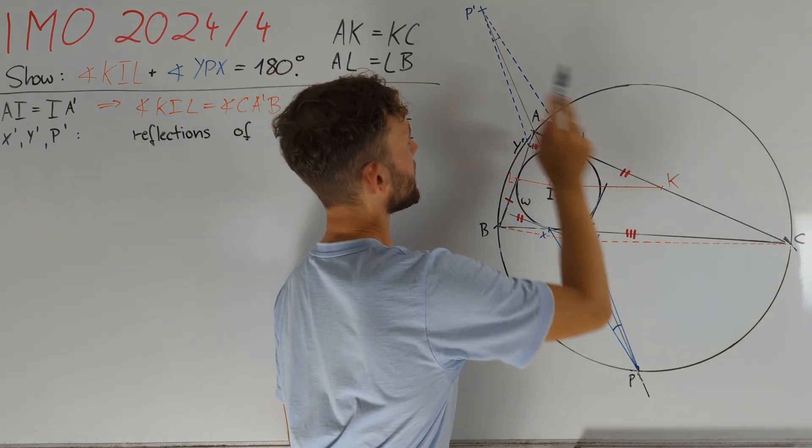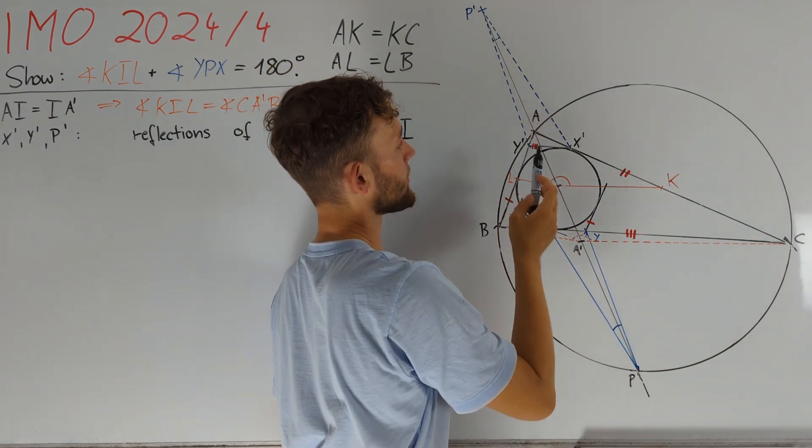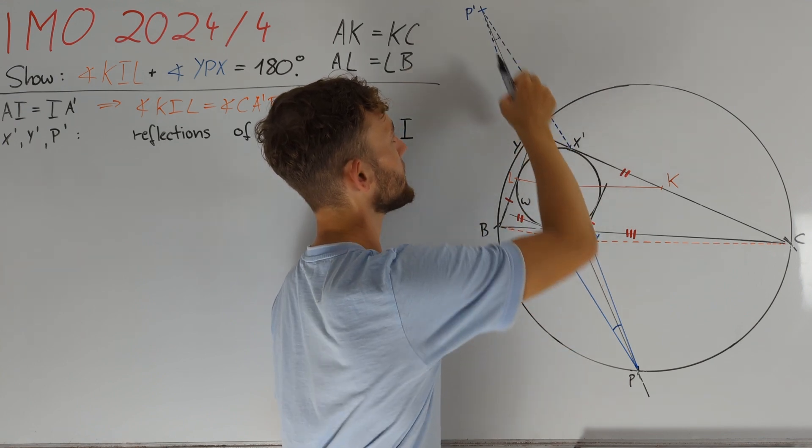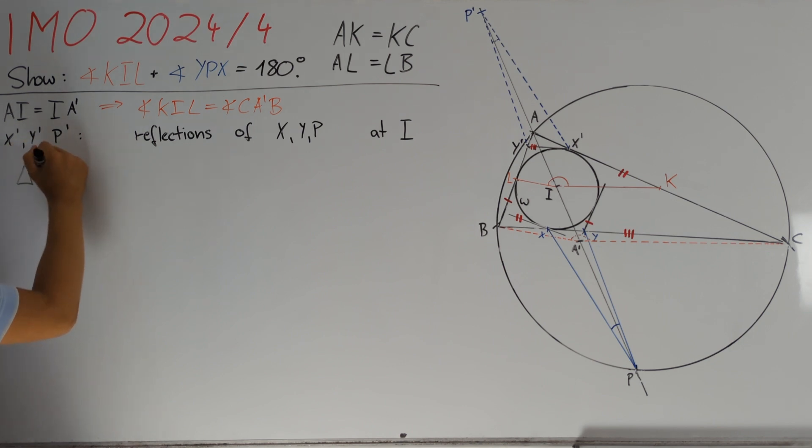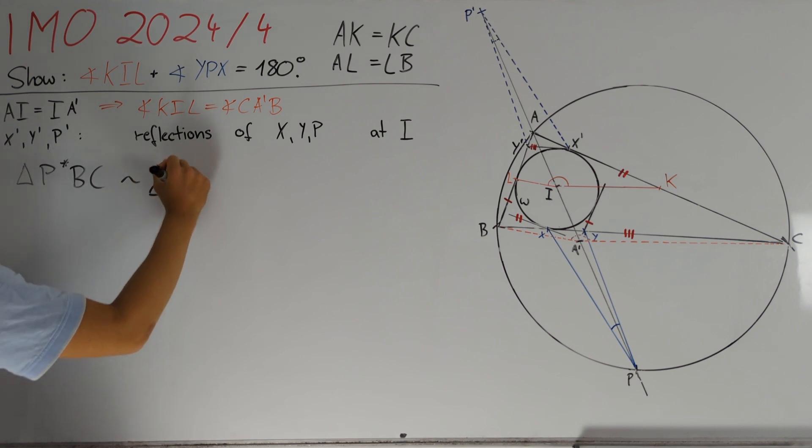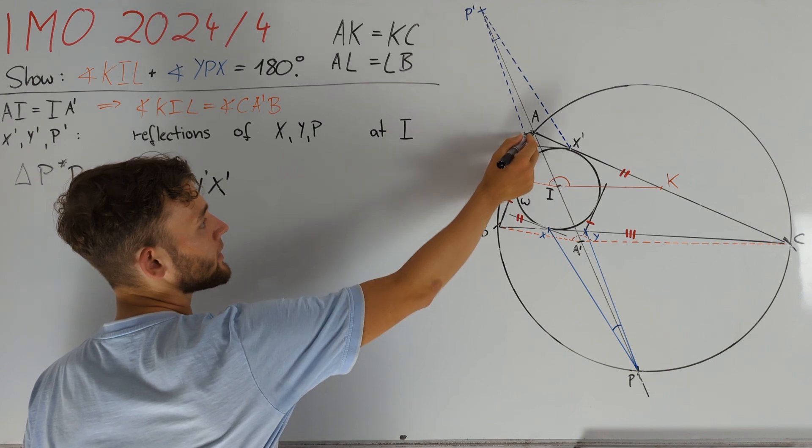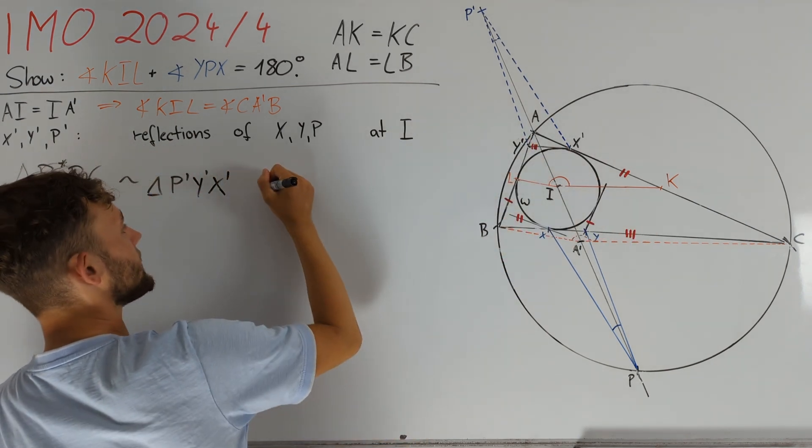Let's denote the image of P' under that homothety, that is going to be way up here, with P star. Therefore, we get that triangles P star BC and P'Y'X' are similar.